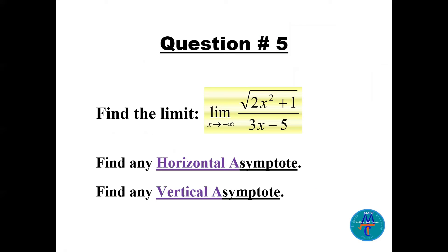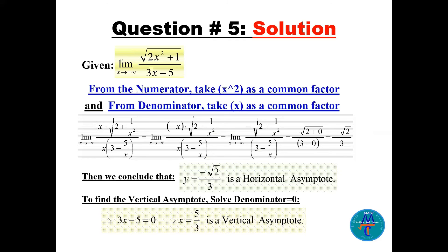Question number five: find the limit of √(2x^2 + 1) / (3x - 5) as x goes to minus infinity, and find any horizontal or vertical asymptotes. From the numerator under the radical, take x^2 as a common factor, giving √(x^2) · √(2 + 1/x^2). Since √(x^2) = |x|, and from the denominator take out x as a common factor: x(3 - 5/x).